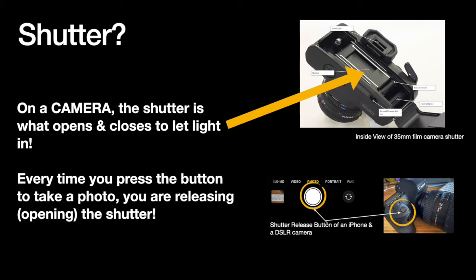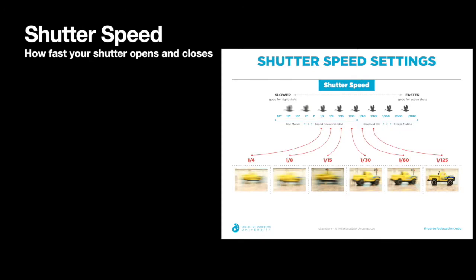Every time you press the button to take a photograph, you're releasing or opening that shutter to let light through. You can see the shutter release on a camera — it's just that circle button you press to take a photo. On a digital SLR, it's the button your finger presses to release the shutter. How fast your shutter opens and closes can be controlled by the shutter speed dial, and we can play with this in Lightroom.